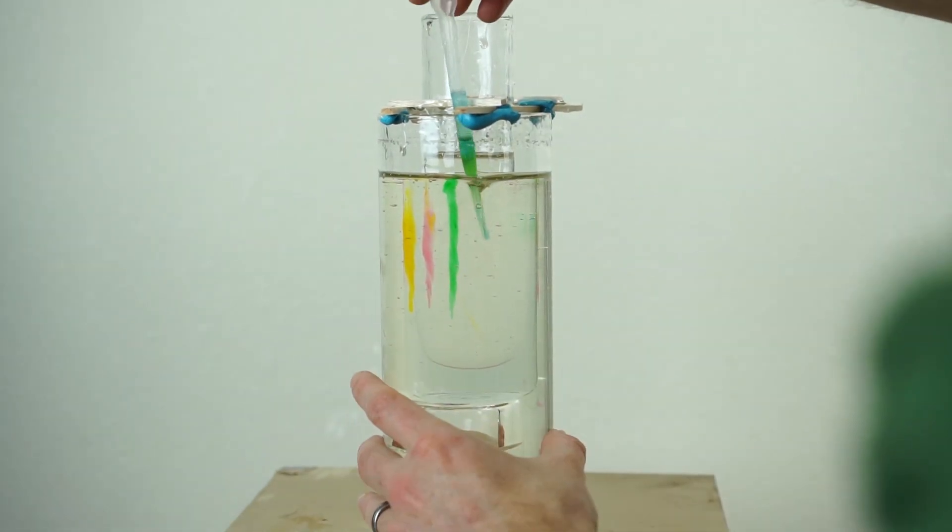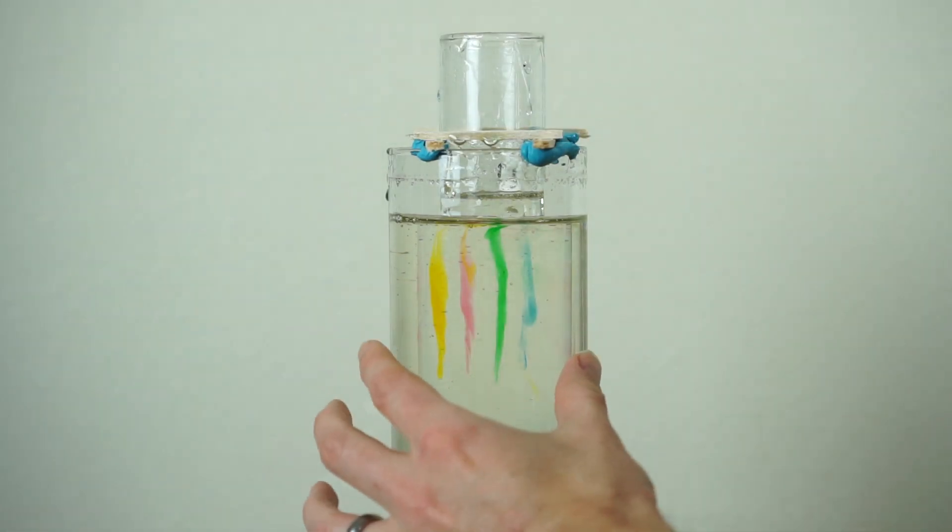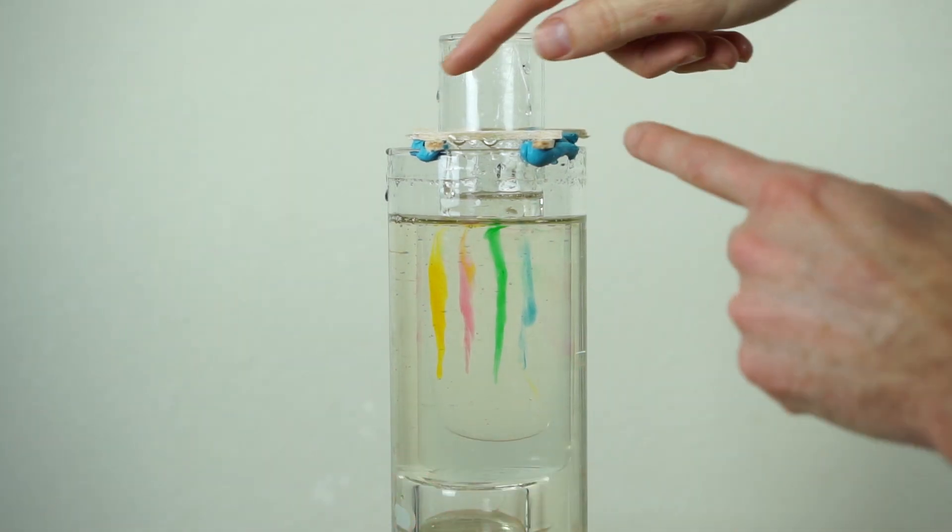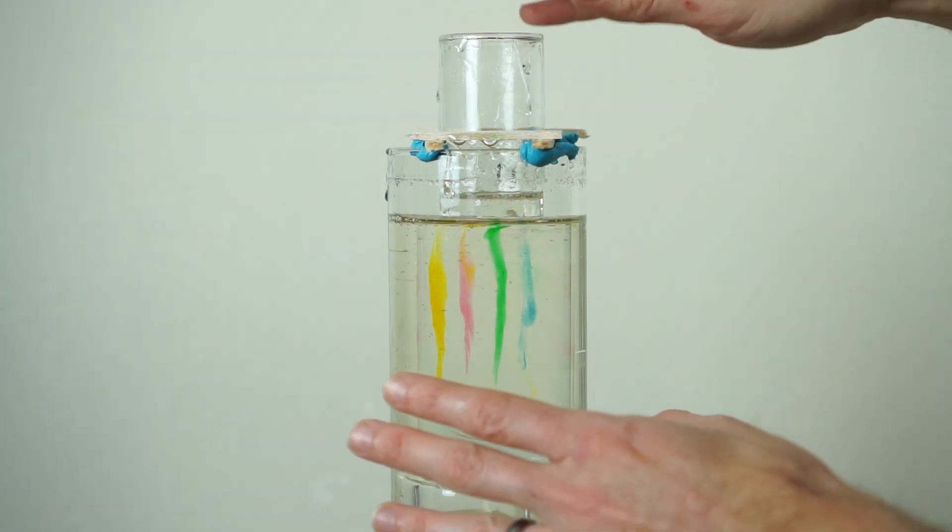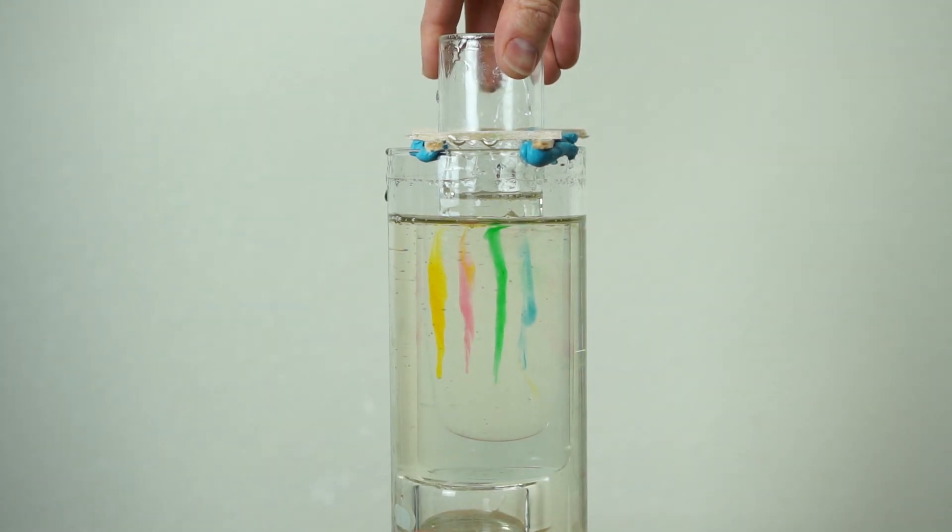Now blue. So I have all my colors in here and I'm going to turn the inner cylinder now. These sticks on top are just to hold the inner cylinder in place so that it doesn't slip or create turbulence or any random movement that I can't undo.